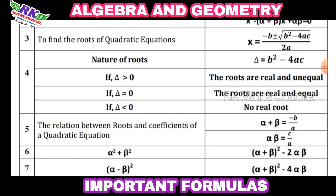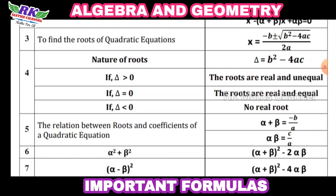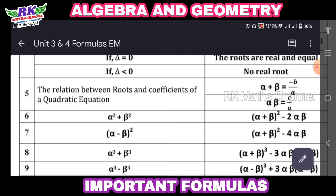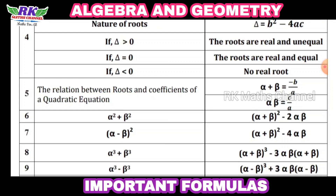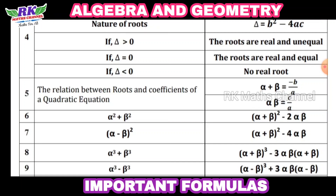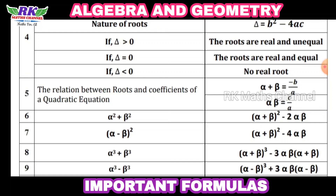If Delta is greater than 0, the value is positive and the roots are real and unequal. If Delta is equal to 0, the roots are real and equal. If Delta is less than 0, there are no real roots.